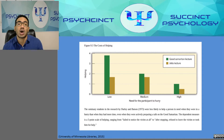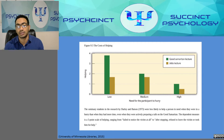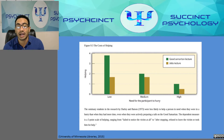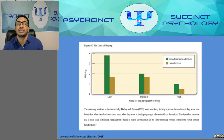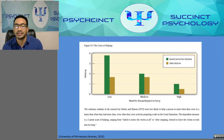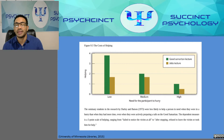Darley and Batson found that the topic of the upcoming speech had no significant effect on helping — students who prepared a speech about helping didn't help significantly more than others. However, time pressure did make a difference: 63% of those with plenty of time offered help, compared to 45% of those right on time, and only 10% of those running late. This aligns with social reinforcement principles — when helping is less costly, we're more likely to do it.